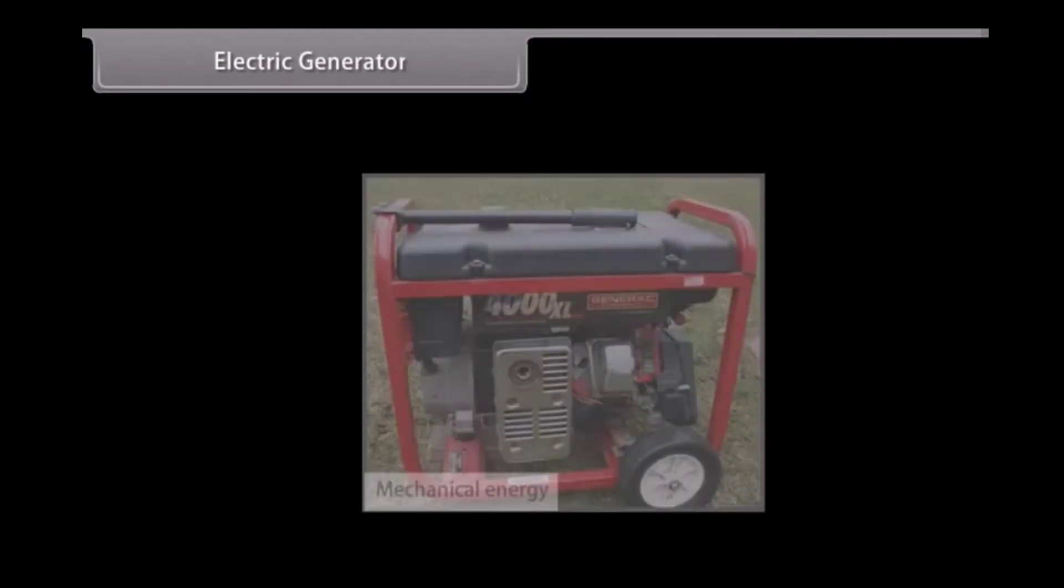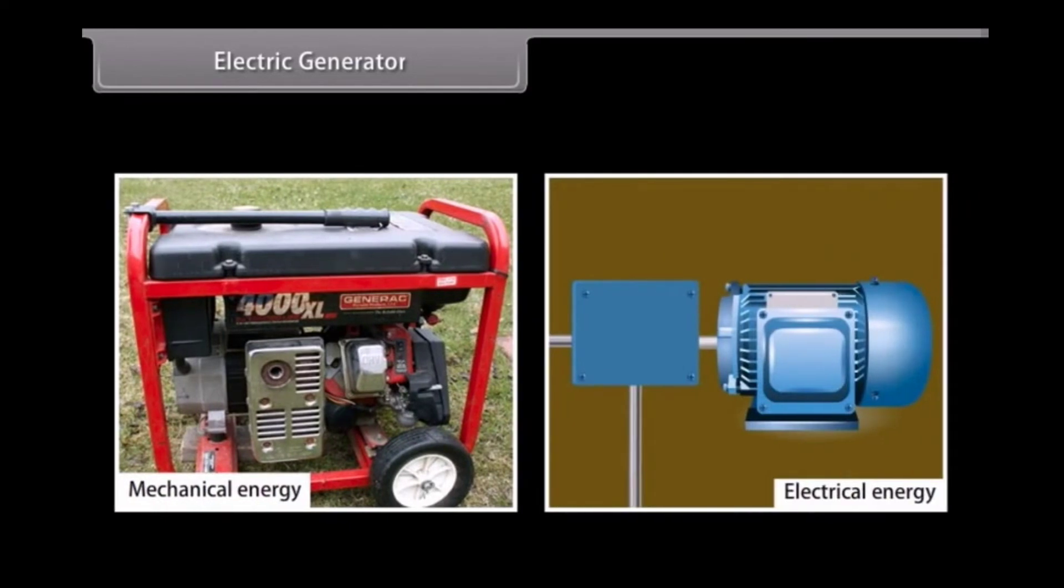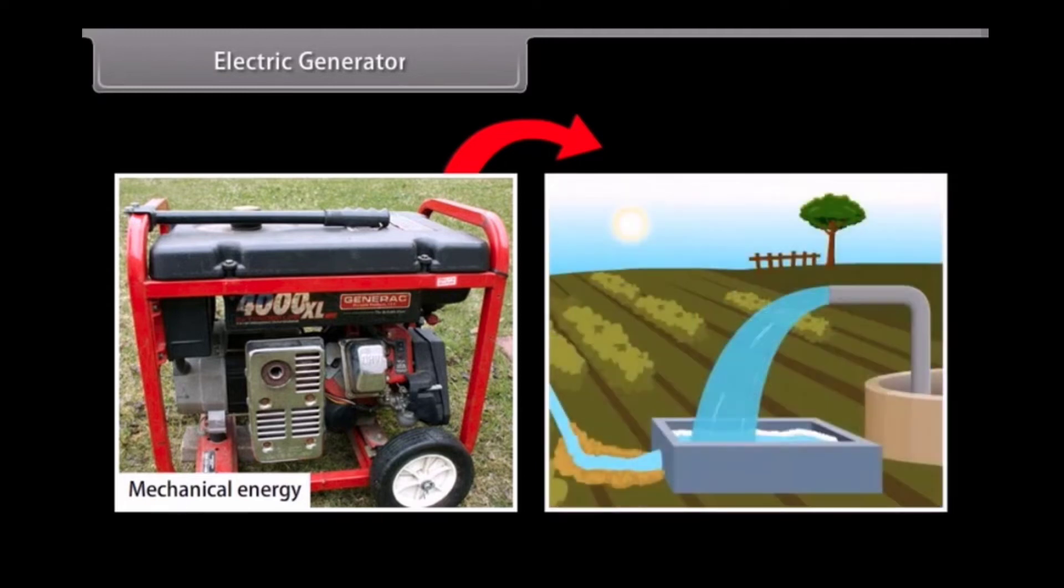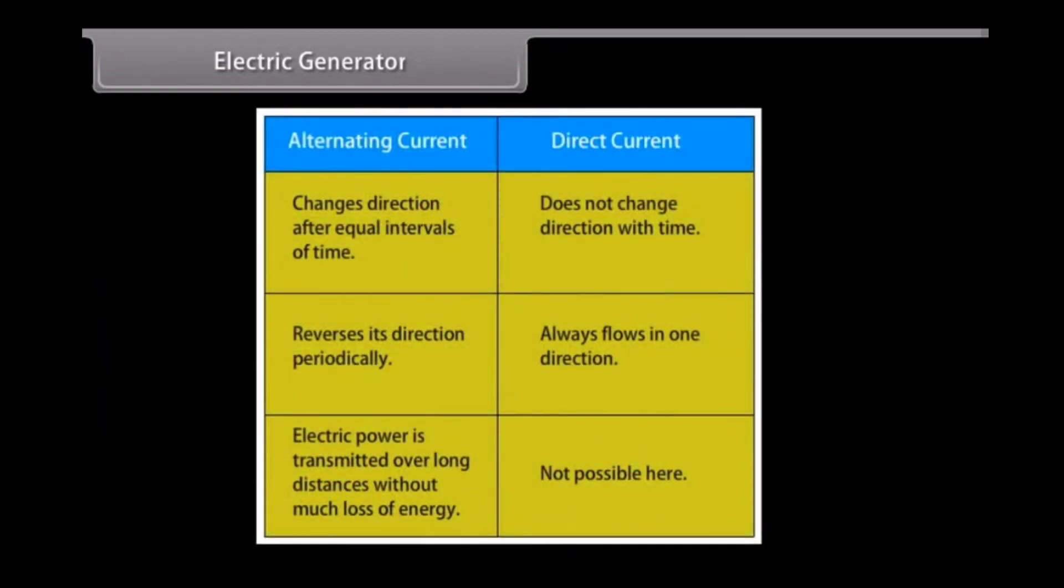Electric generator. An electric generator converts mechanical energy to electrical energy. It forces electrical charge to flow through an external electrical circuit. Examples include a water pump which causes water to flow but do not create water. Electric generators operate based on electromagnetic induction. That is, whenever a conductor moves to a magnetic field, a current is induced in this conductor. If a magnet is spinning inside a coil, alternating current is induced in the coil. Alternating current changes direction after equal intervals of time. The other type of current is direct current which does not change direction with time.